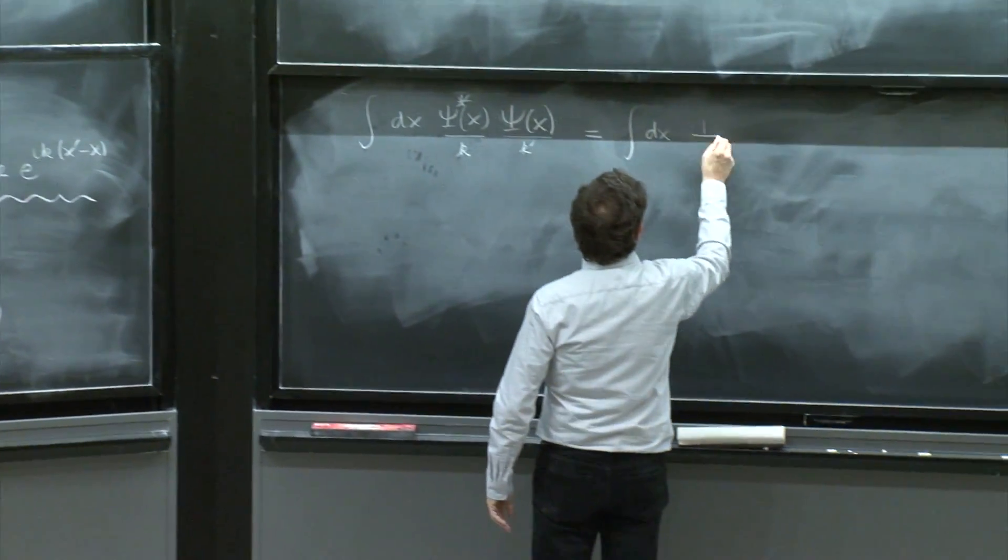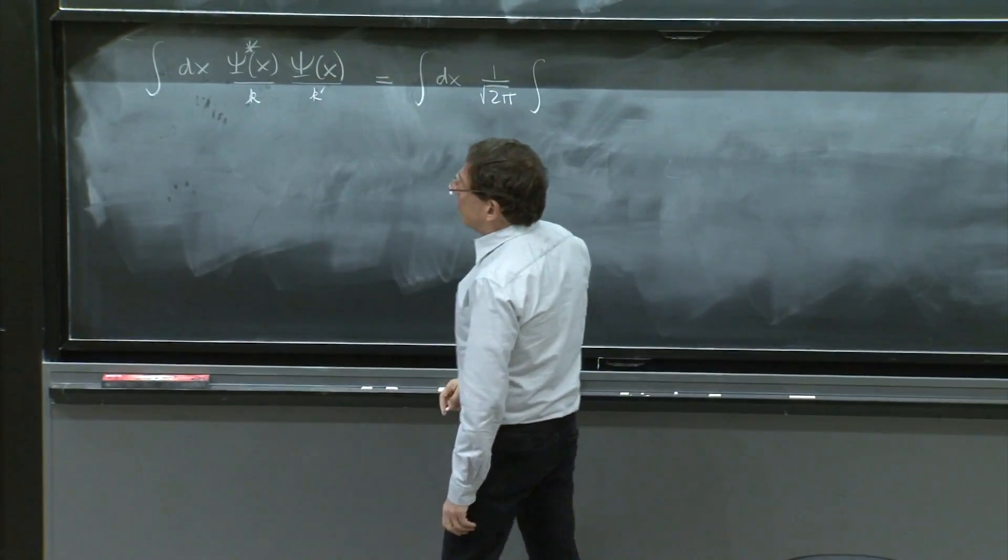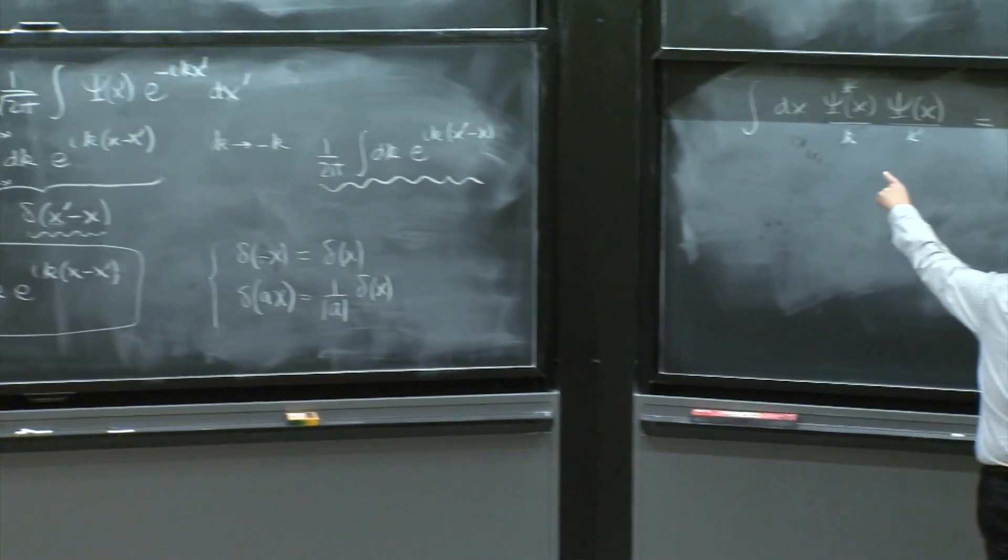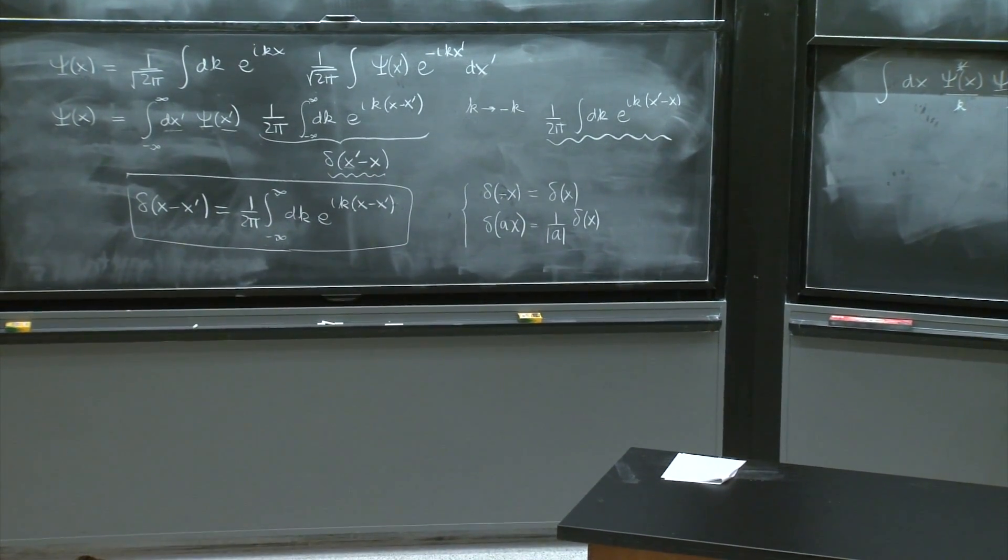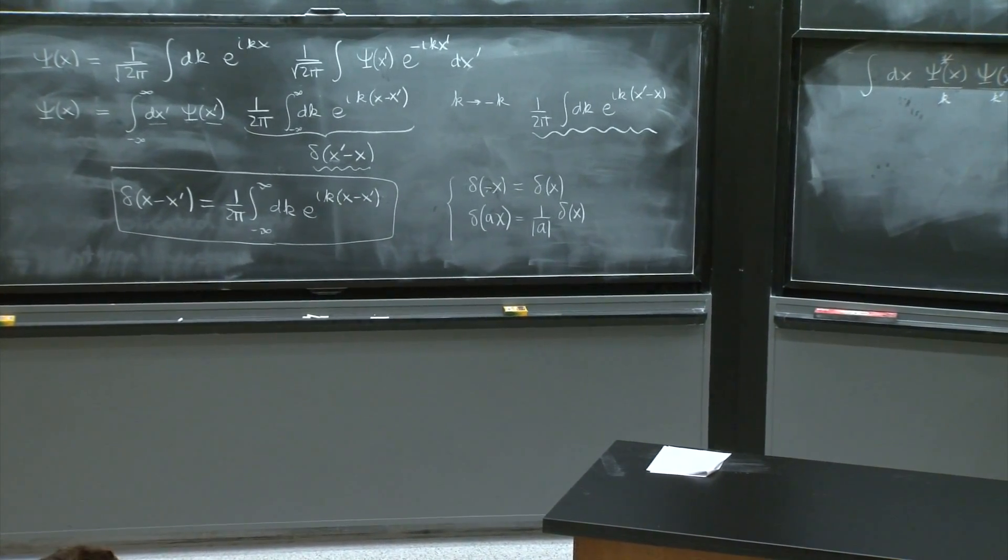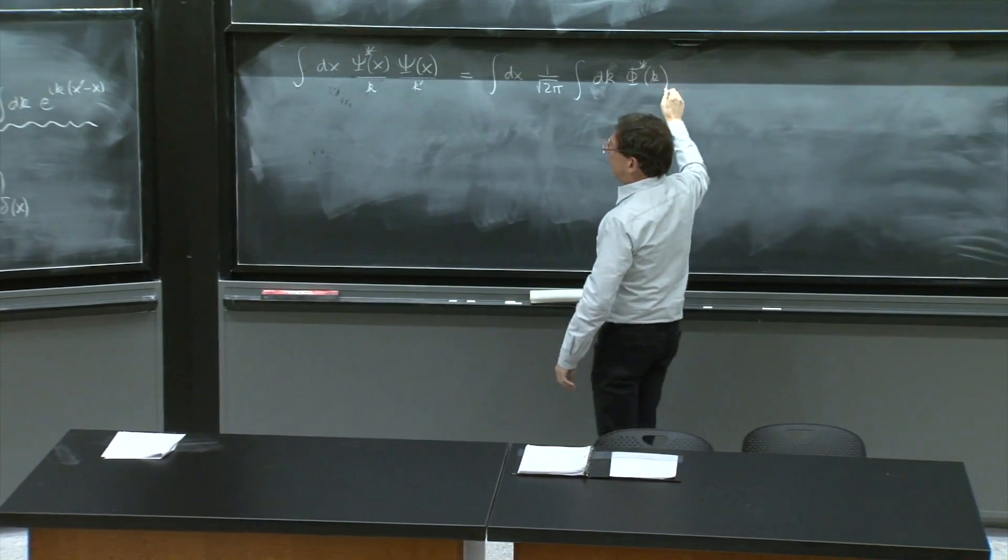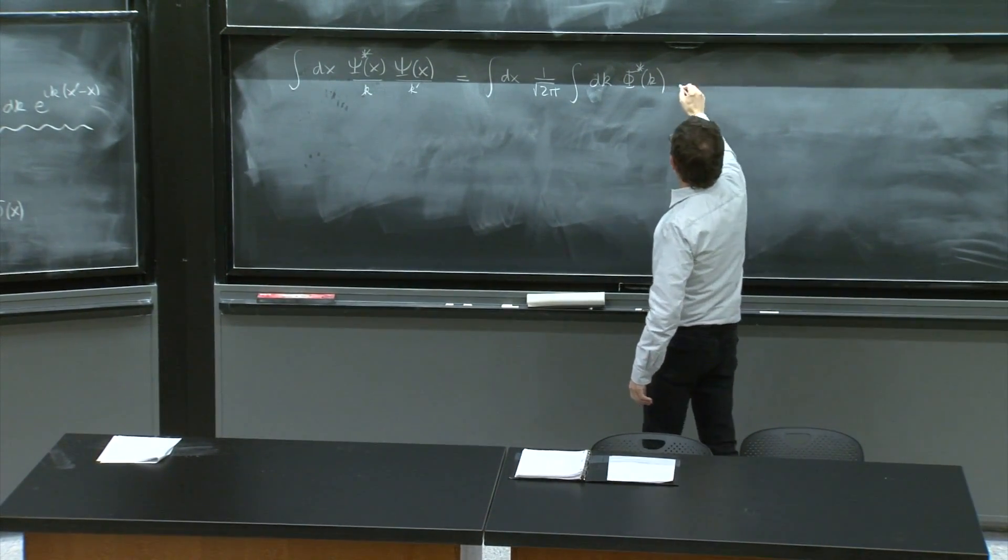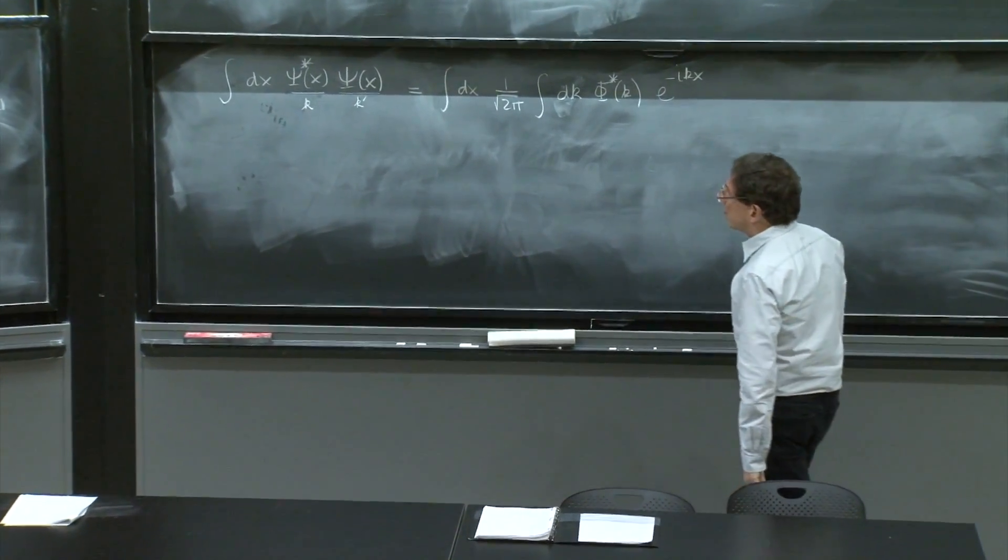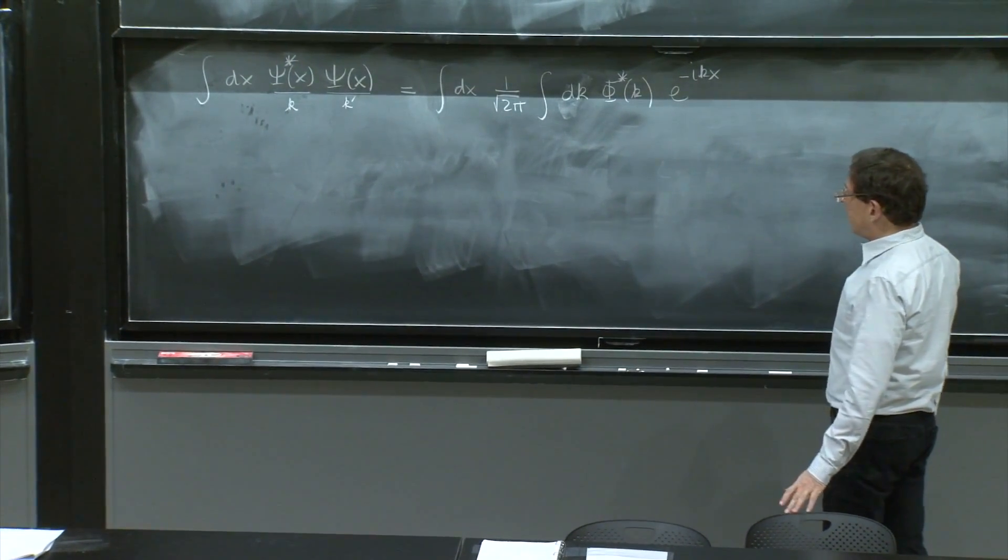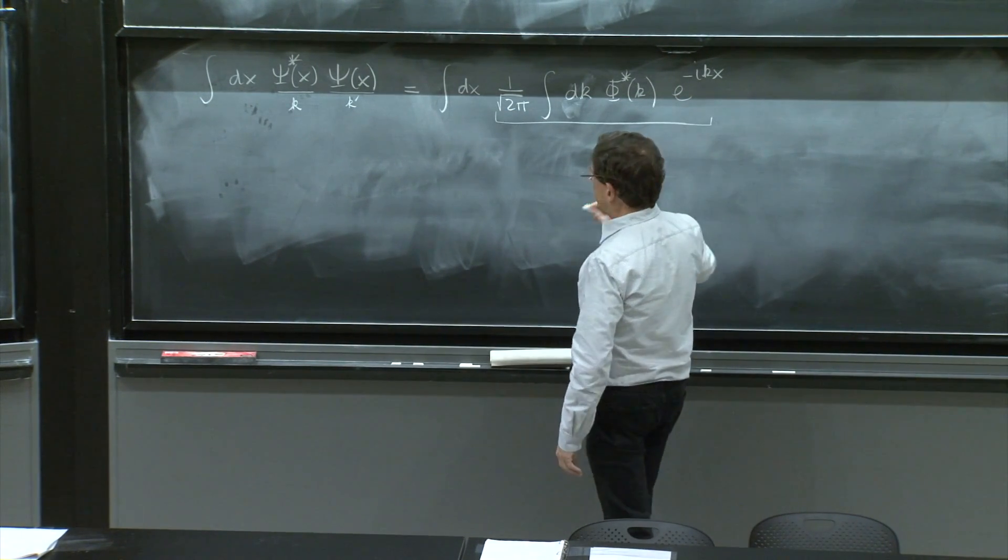So here we go, dx, 1 over square root of 2 pi integral. We said this one is over k. So it would be phi star, let me put the k first, dk phi star of k, e to the minus ikx, and dk. That's the first psi. This is psi star.